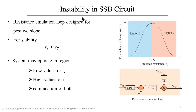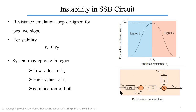Let us understand how instability in the SSB circuit occurs. The resistance simulation loop is designed for the positive slope of the power curve. Hence the circuit is only stable for RE less than RS. Let us assume the circuit is operating in region 1. There is a small positive value of error E. If the error is positive, the output of the PI controller increases, hence the value of emulated resistance increases. In region 1, an increase in emulated resistance increases the power absorbed, hence the value of VC2 increases and the error reduces. So the resistance simulation loop is stable in region 1.